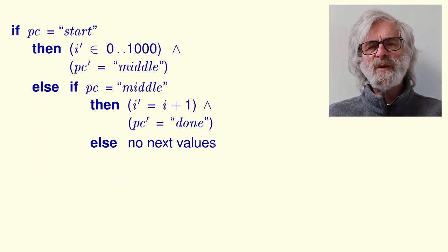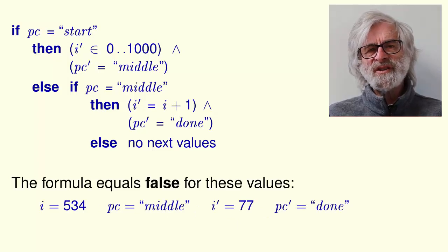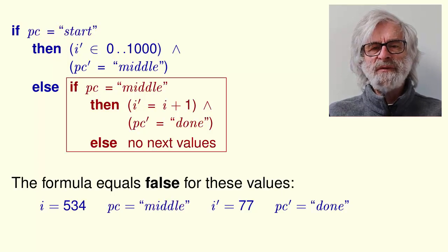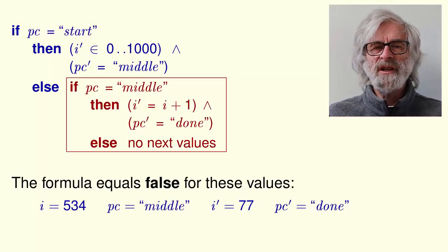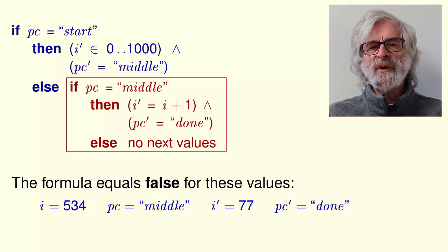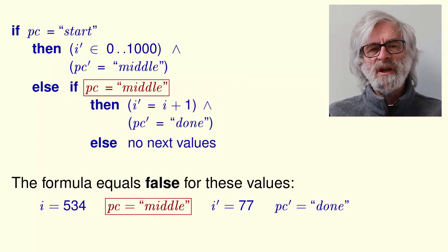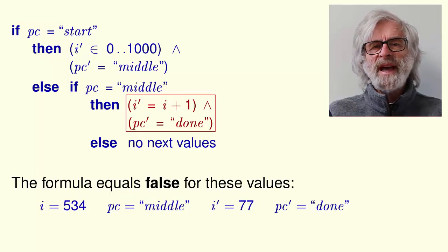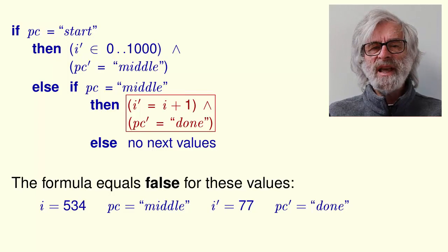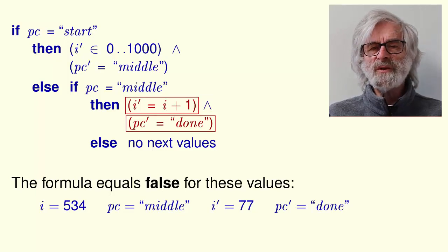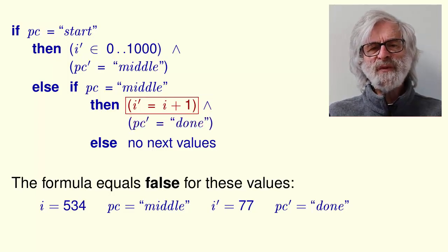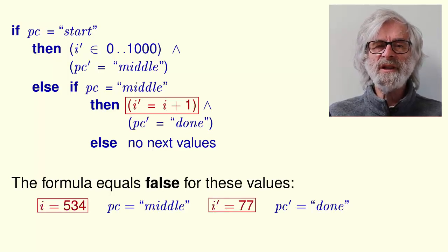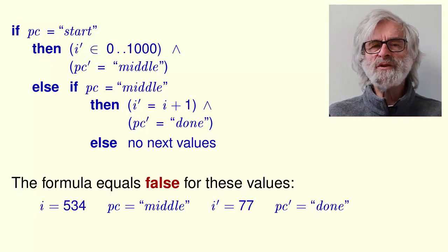The formula equals false for these values because the if test equals false. So the value of the formula equals the value of the else clause. That clause is an if formula whose test equals true. So it equals its then clause. The value of that clause equals true if and only if these two formulas both equal true. But this formula equals false because i prime does not equal i plus 1. So the entire formula equals false.